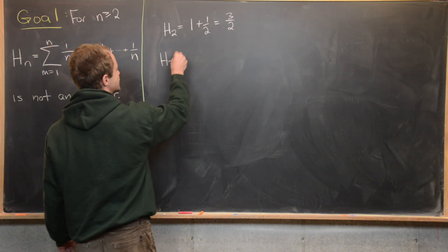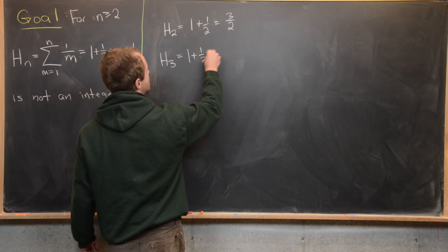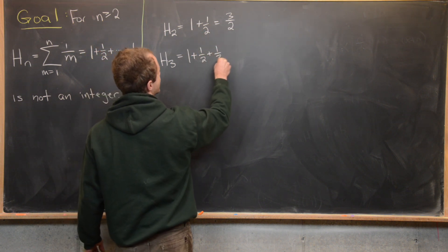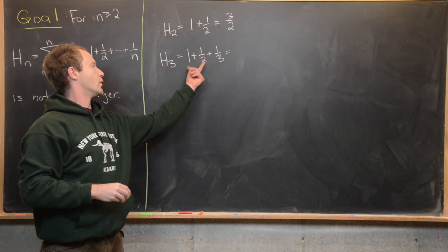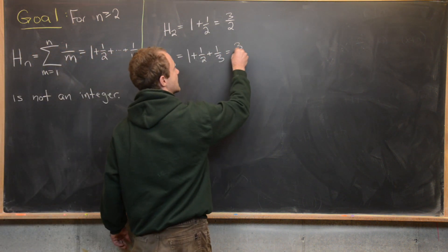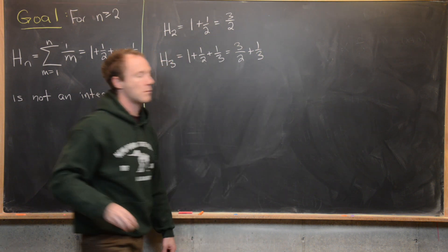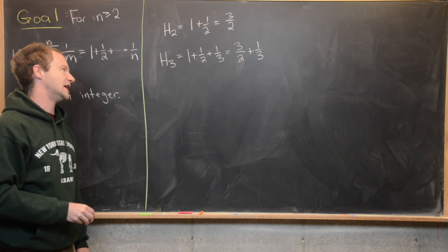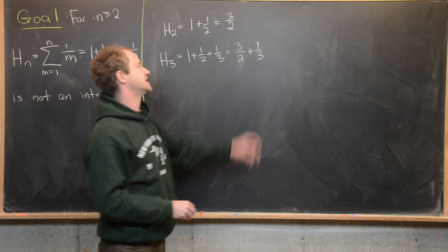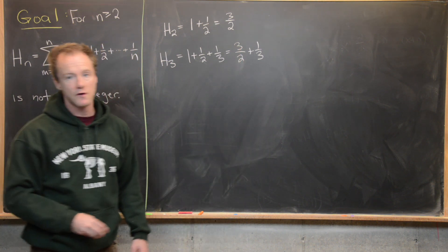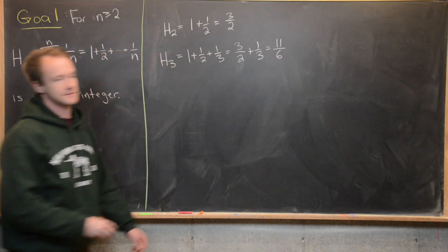Let's look at H3. That's 1 plus 1/2 plus 1/3. We can use the fact that 1 plus 1/2 is 3/2, so we have 3/2 plus 1/3. The common denominator is 6, giving us 9/6 plus 2/6, which equals 11/6.